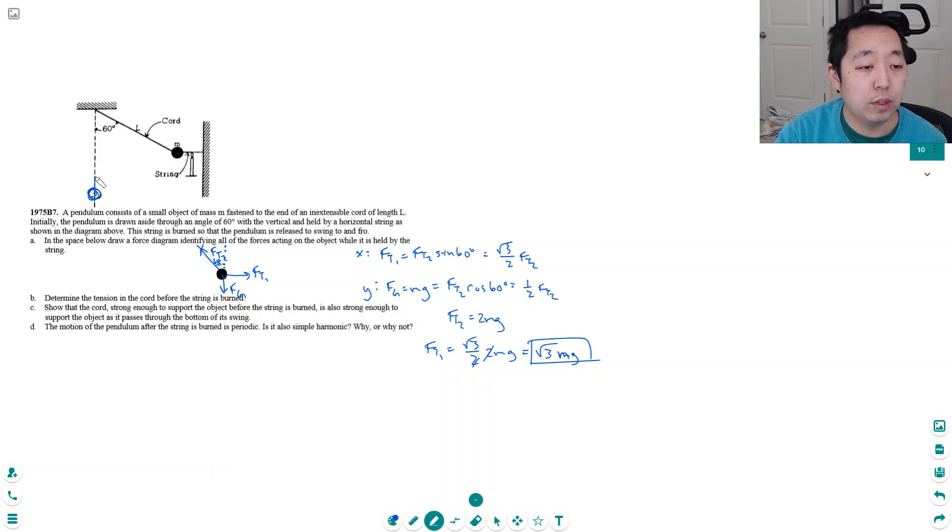As it's going through the bottom, I got to look at the free body diagram. I have mg going down and FT2 going up. The net force is not equal to zero because the acceleration is not zero. It's making a circular arc path, so its acceleration here is centripetal acceleration equal to m v squared over r.